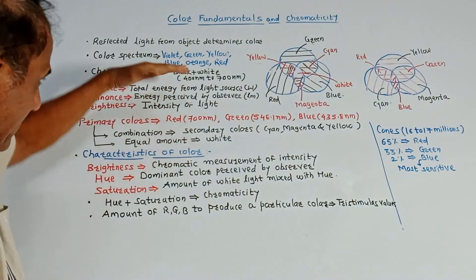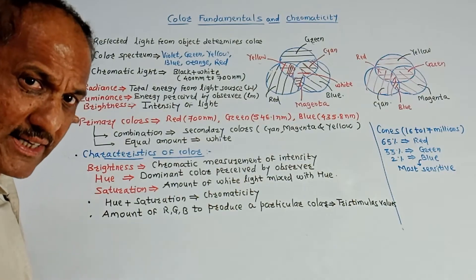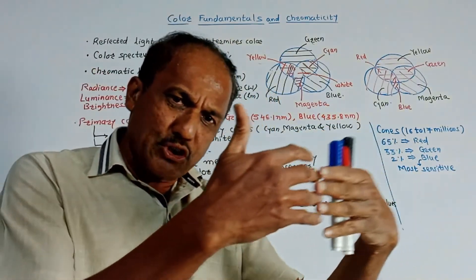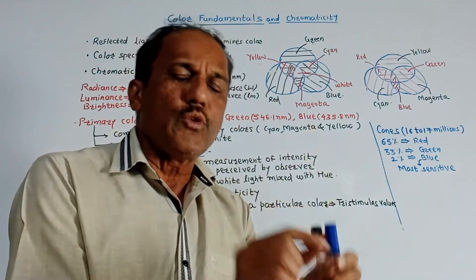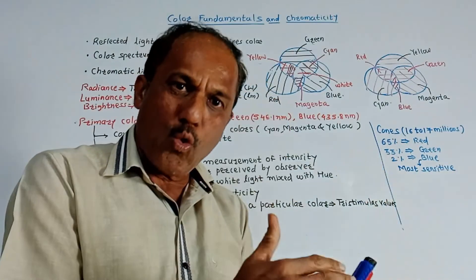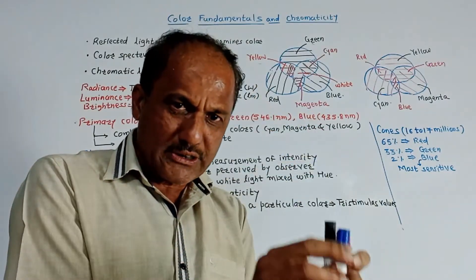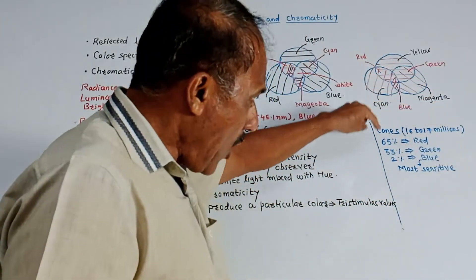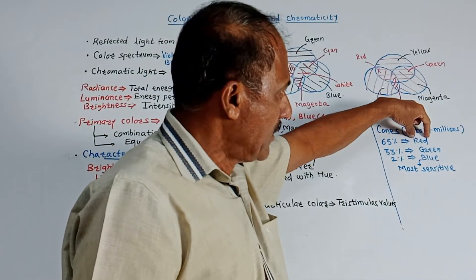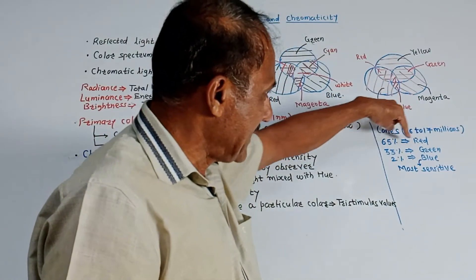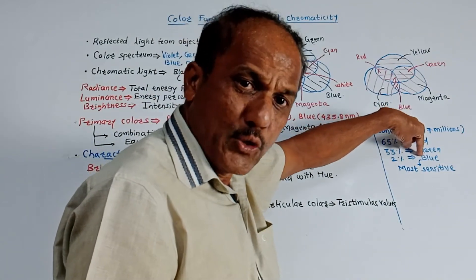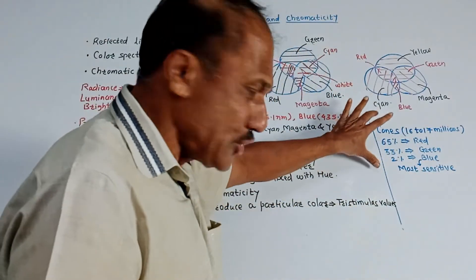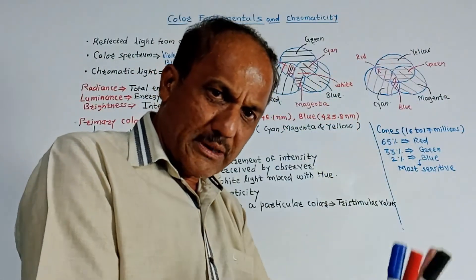Now, the three characteristics we discussed — radiance, luminance, and brightness — were for chromatic light, that is black and white. If we are talking about color TV, any color perceived by our eyes is due to the cones present in our eye. Cones and rods are receptors, and particularly cones are responsible for sensing the color of light. There are 16 to 70 million cones in our eyes. Out of these, 65% are responsible for red color, 33% for green color, and only 2% are related to blue color. However, the cones related to blue color are more sensitive compared to the others.